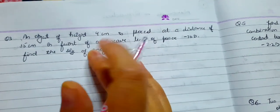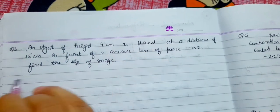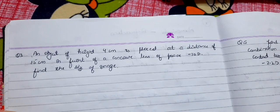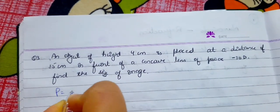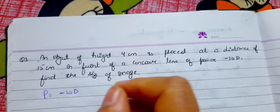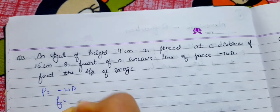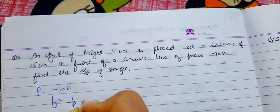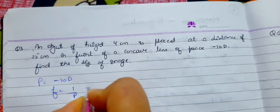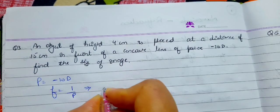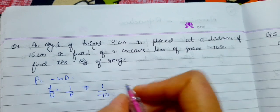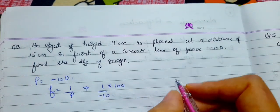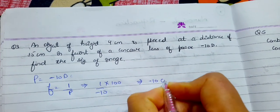Next question: an object of height 4 cm is placed at a distance of 15 cm in front of a concave lens of power -10 diopter. Find the size of the image. It is a concave lens, power is given as negative: -10D. Focal length = 1/P = 1/(-10) = -0.1 m. Converting to cm: f = -10 cm.